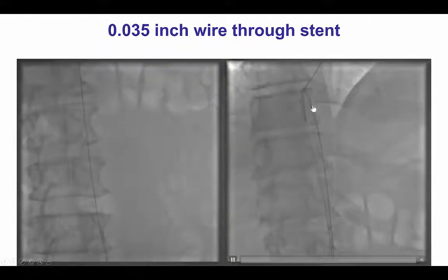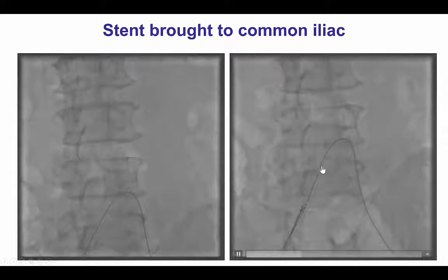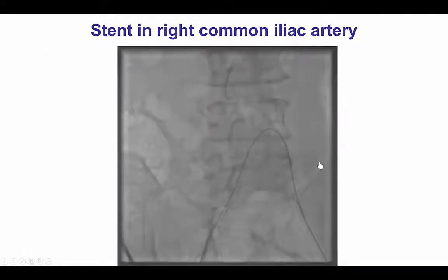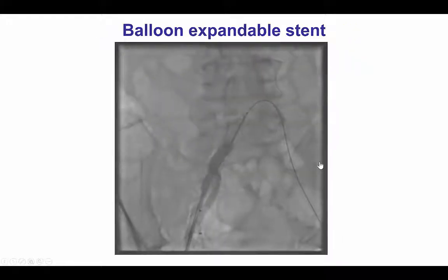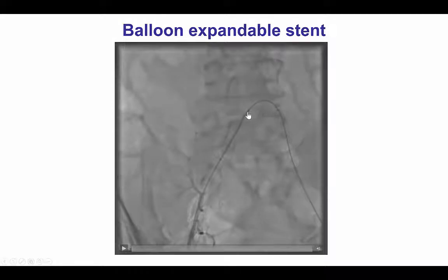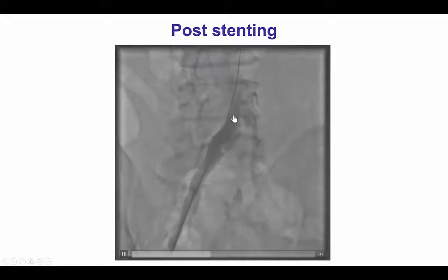By doing that, we were able to advance a wire through the lost stent. That wire was snared, and we essentially created a rail, allowing us to pull the stent all the way into the right common iliac artery — a much more favorable location than the distal aorta. We then advanced a balloon-expandable stent next to the lost stent, which was deployed, essentially covering the previously placed lost stent and restoring antegrade flow into the iliac.